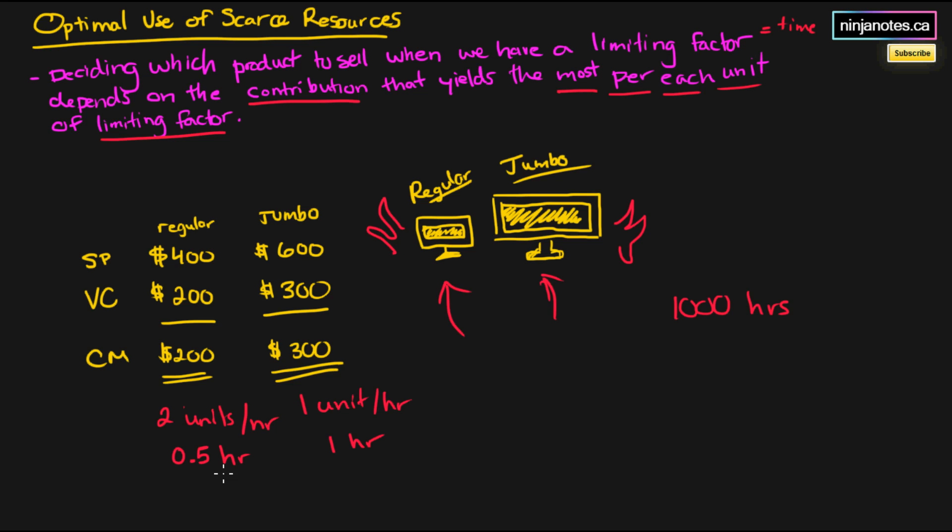How many units are we going to be able to produce? 1,000 divided by 0.5 hours, which is how long it takes to produce each unit, equals 2,000 products of the regular. While to find out how many units of the jumbo we can make, 1,000 divided by 1 equals 1,000 products of the jumbo.